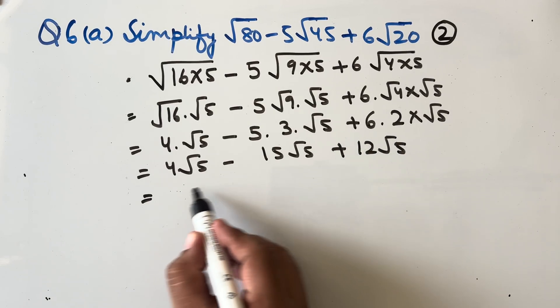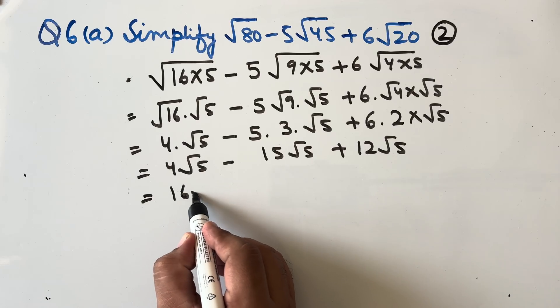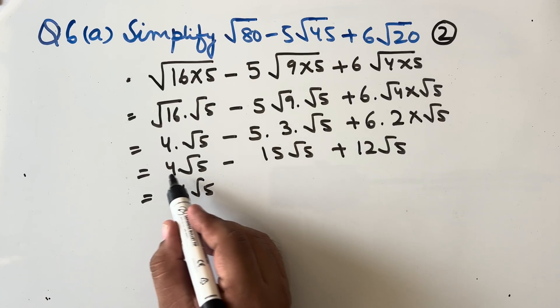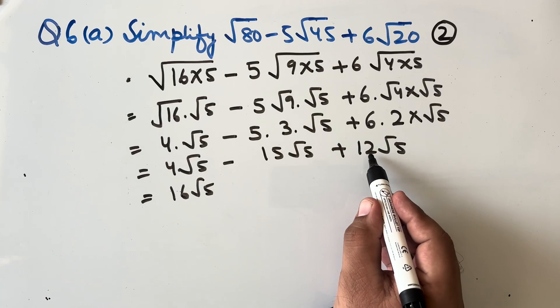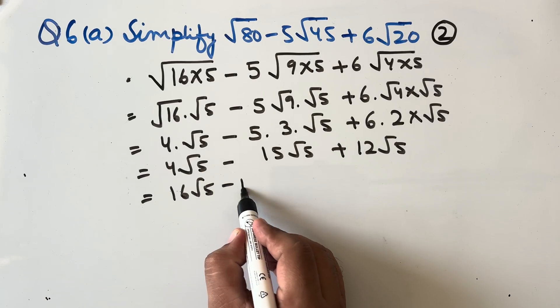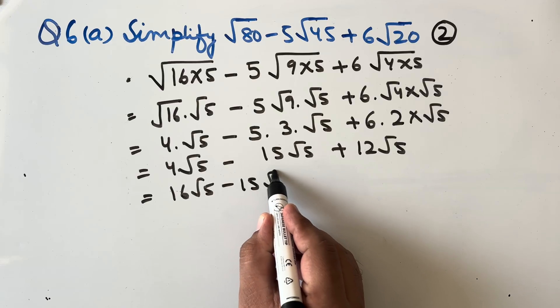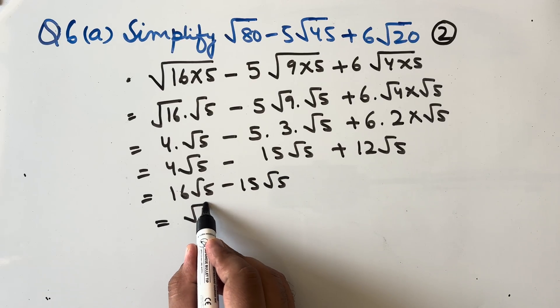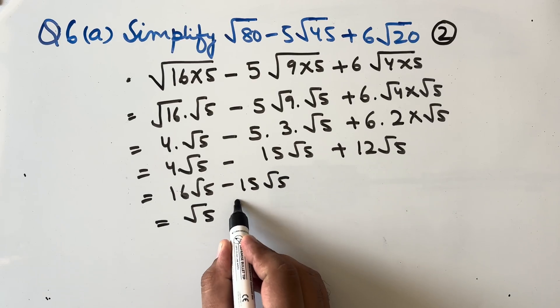Combining the terms: 4√5 + 12√5 − 15√5 = 1√5. Our answer is √5.